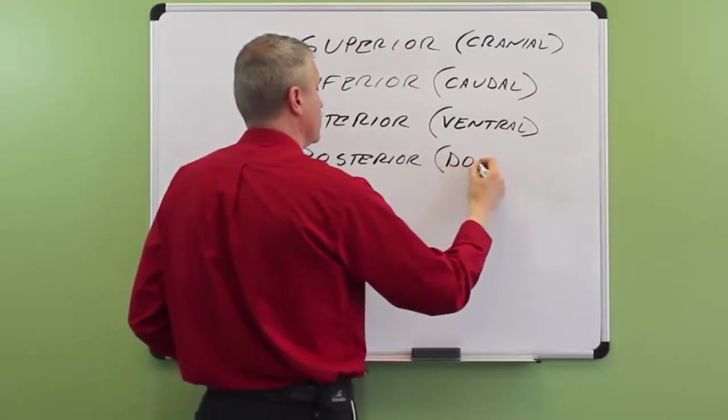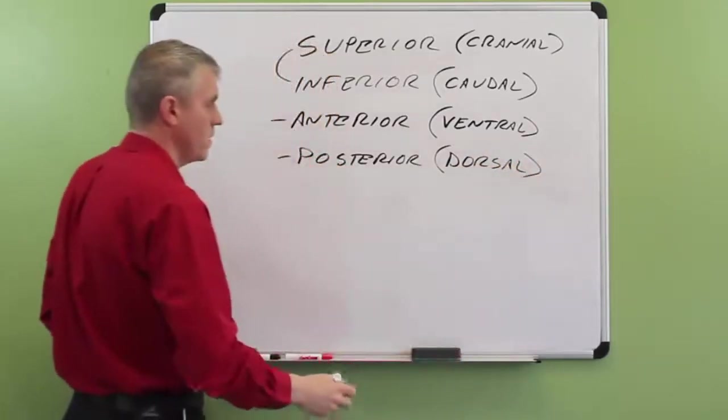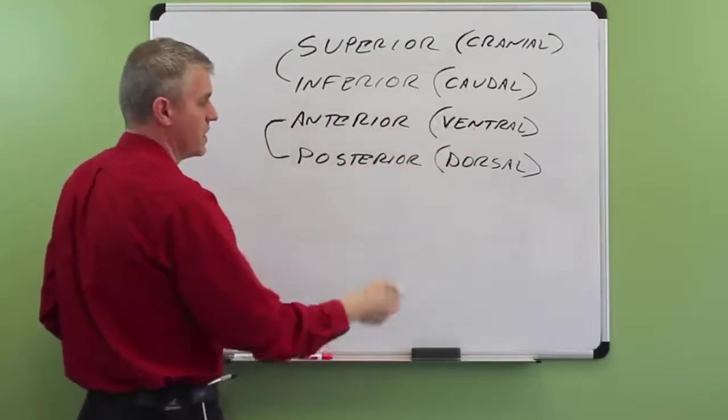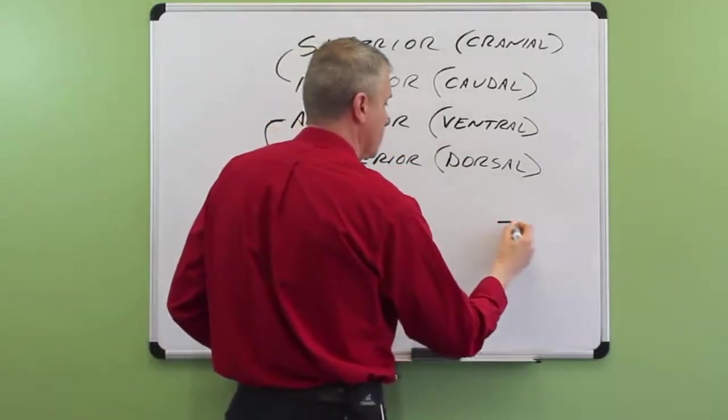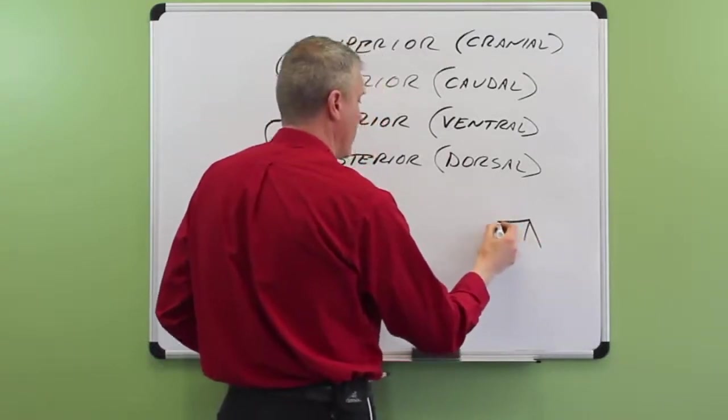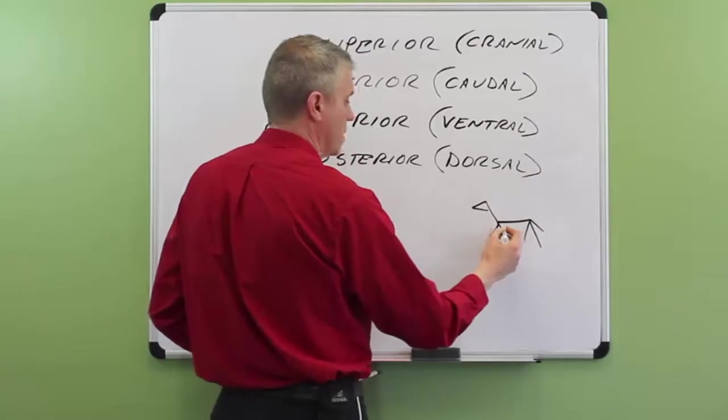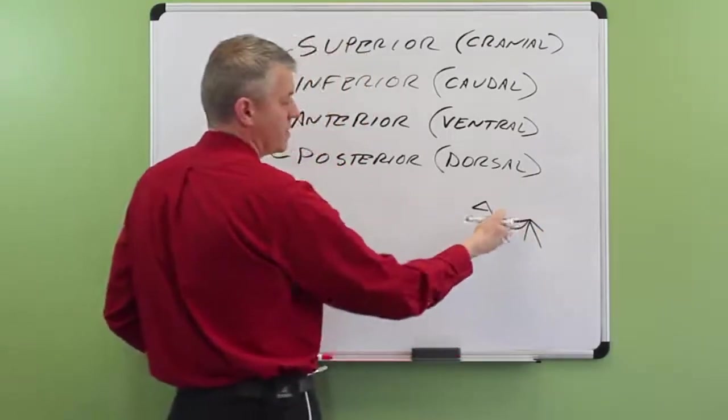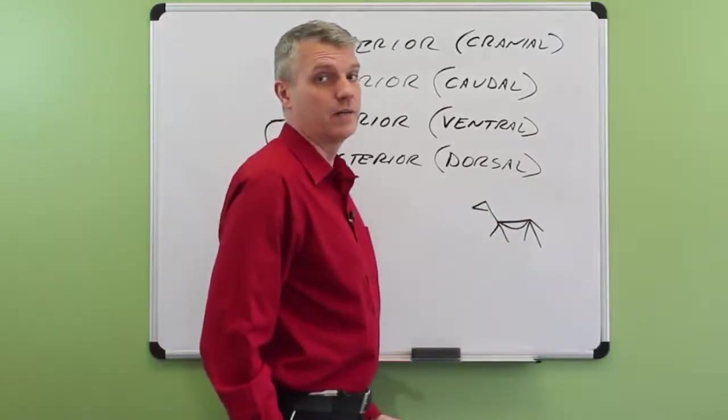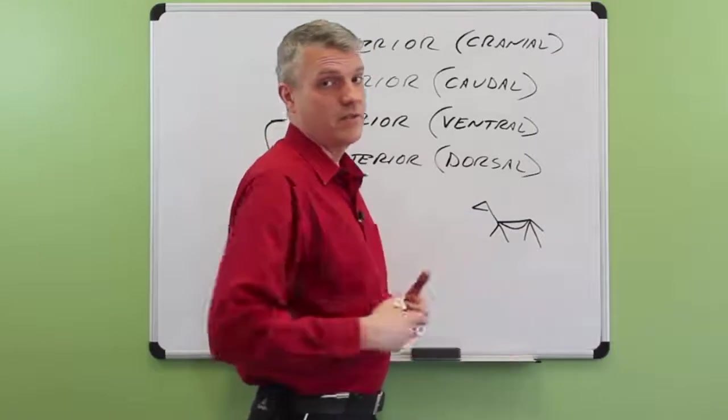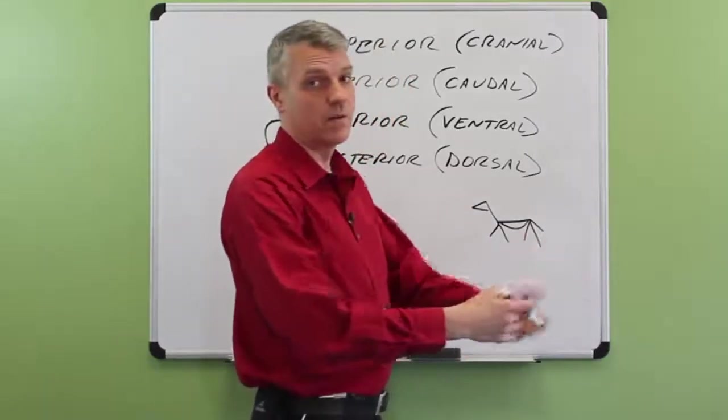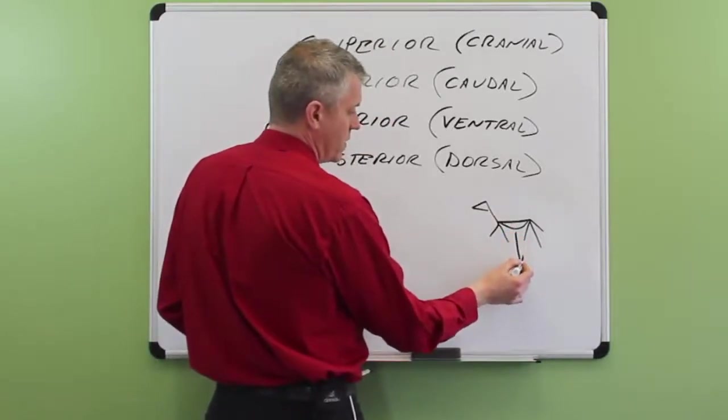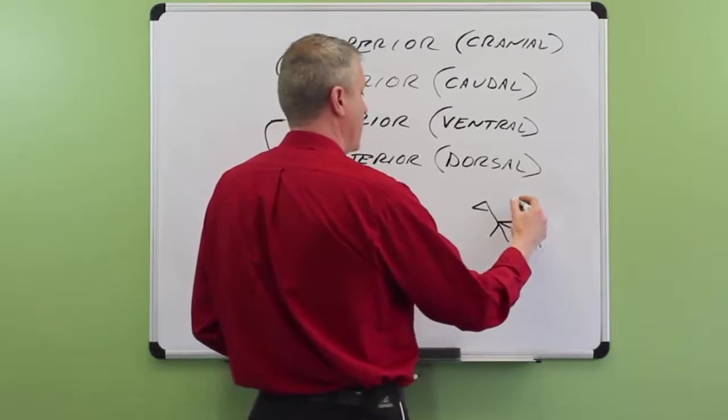And by the way, for all of these terms that have two words representing them, here's one piece of why that is. Imagine a horse or a dog, maybe. There's my poorly drawn horse. They've got a belly, of course. But their spine is on the horizontal. In humans, we stand upright. Right? So, the belly, for example, faces forward, faces in the anterior direction. In the horse or the dog, ventral would be downward. And dorsal or towards the back would be upward.